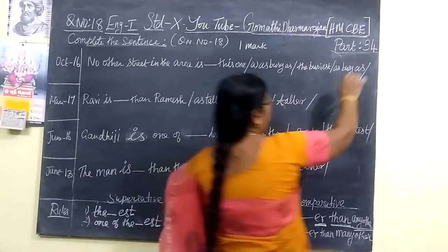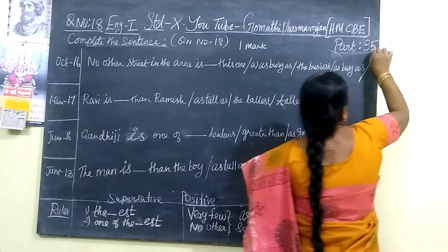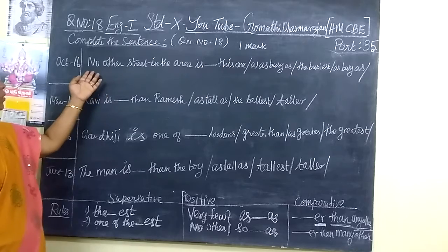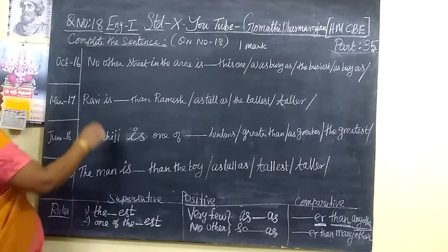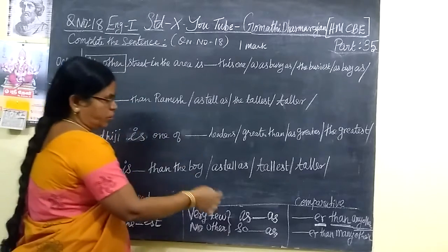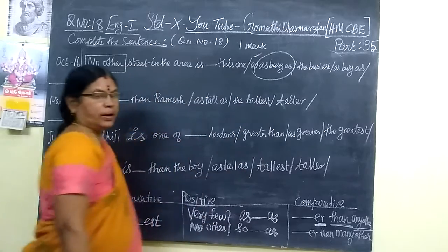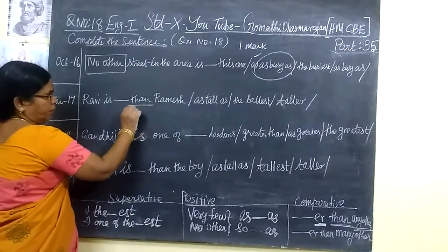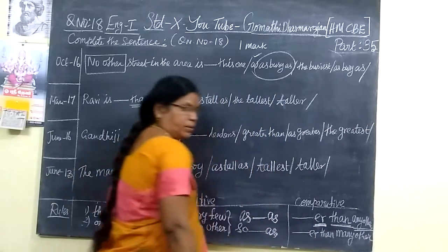Now we see part 35 — the same type of passage. Here the keyword is 'no other.' So 'no other' means you have something as there, so this one is the correct answer. Here the keyword is 'than.' With 'than,' you never know here — this option is the correct answer.